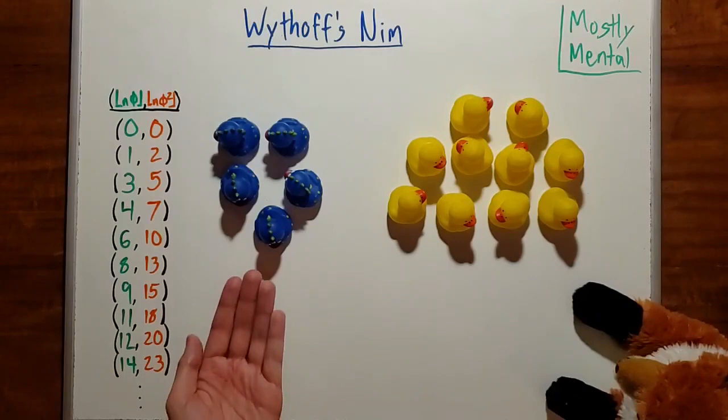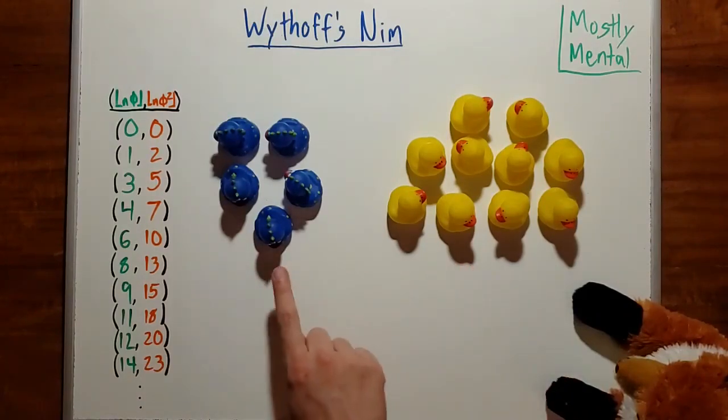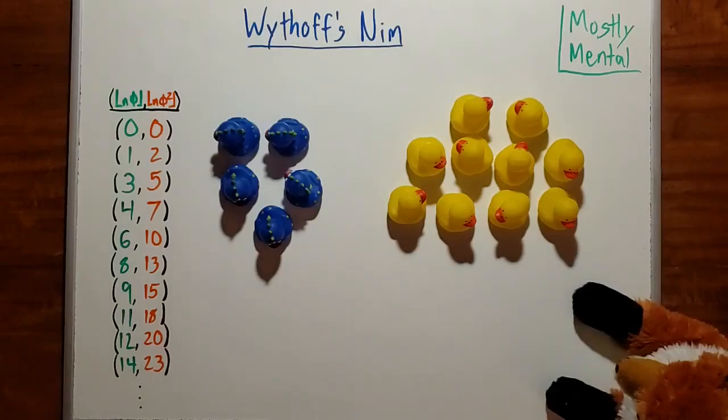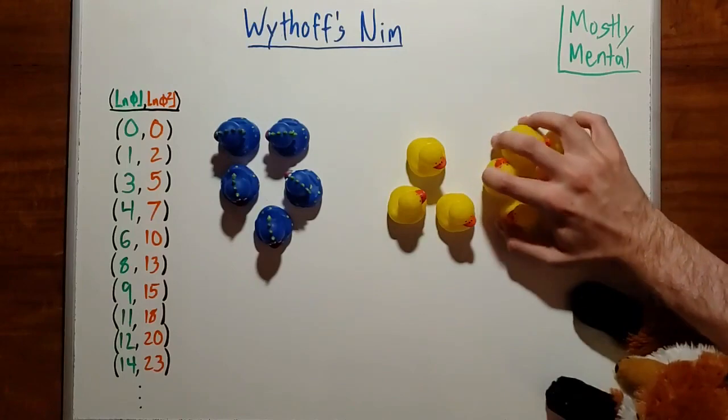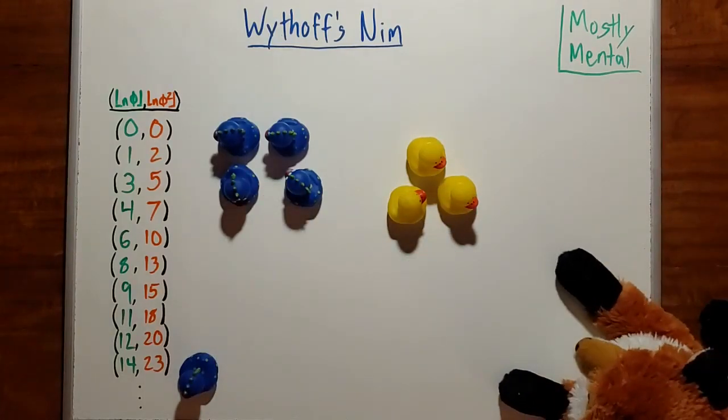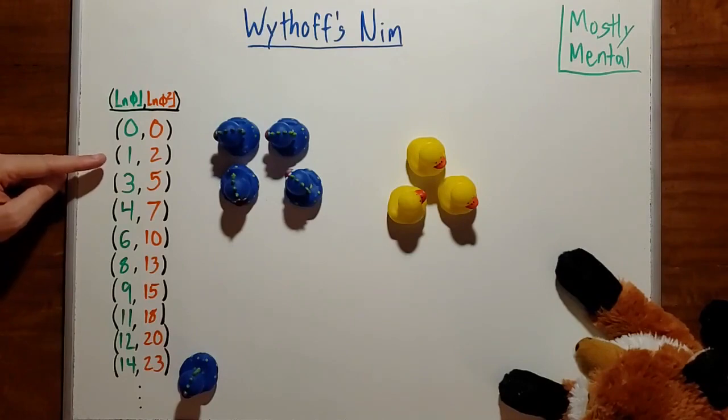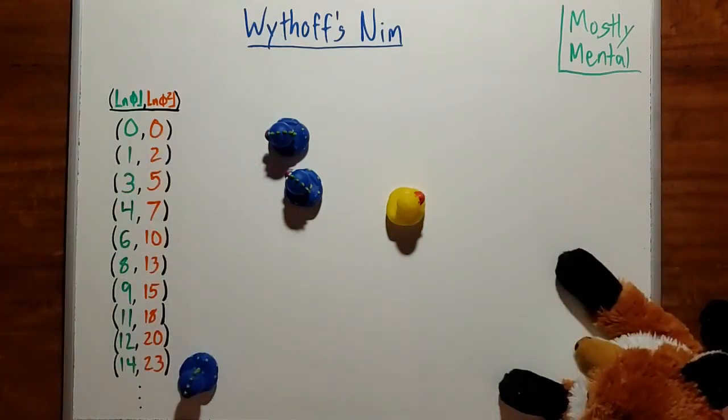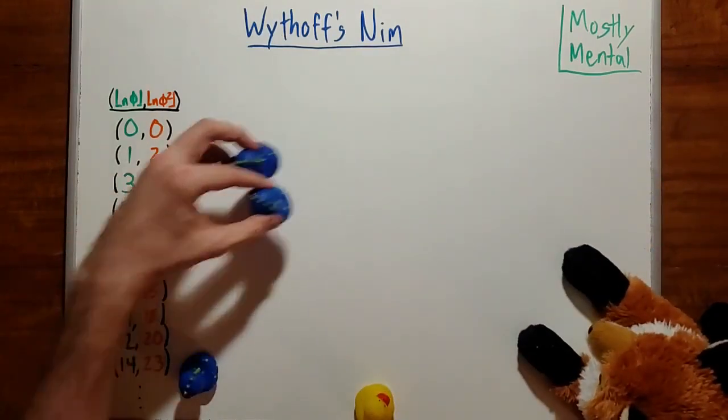Once again, we have piles of sizes 5 and 10. I'll start by taking the ratio. 10 over 5 is 2, which is more than phi. So I know I'll need to take ducks away from the second pile and leave the first pile alone. And that first pile has 5 ducks in it, so I look to my Beatty sequences and see 5 is next to 3. That means I should end up with 5 and 3, so I'll need to take 7 ducks away from this pile. Now Aurora might take 1 from this pile, leaving 4 and 3. Those have a ratio between 1 over phi and phi, so I know I need to match the difference. 3 minus 4 is negative 1, so I look for the pair with difference 1 in position 1, and I swap the order to get 2 and 1. That means I'll need to take 2 ducks from each pile. Finally, Aurora could take the duck on the right, which would leave me to remove all the ducks on the left, and win.